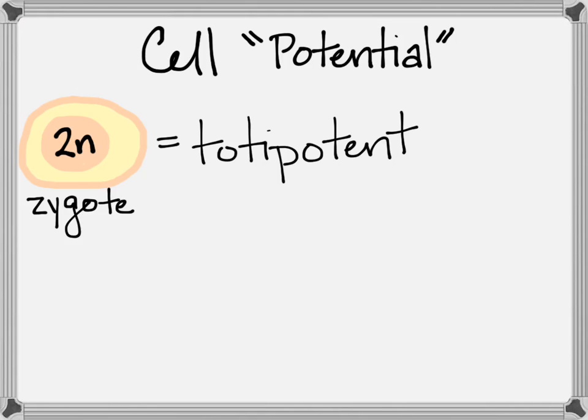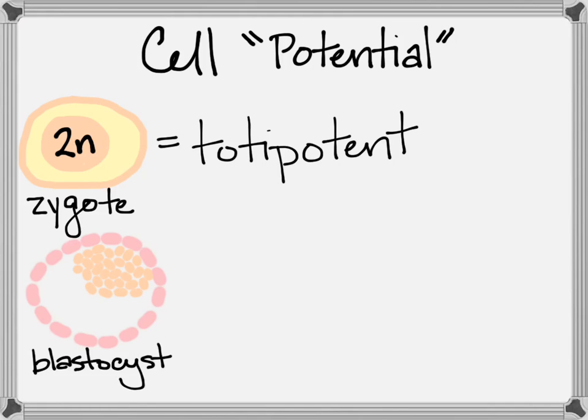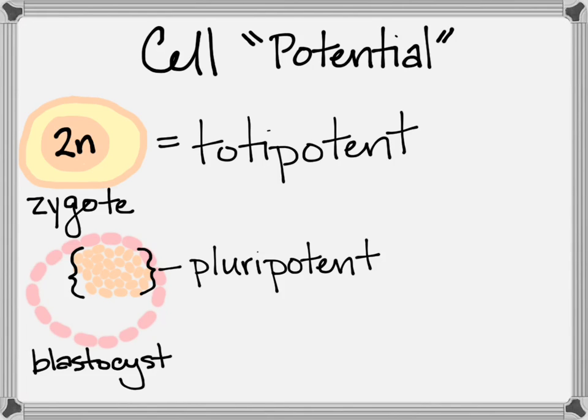After a few cell divisions, the cells start to express genes in ways that will make them forever different from their neighbors. Eventually, that creates that inner mass of cells and an outer mass of cells — the blastocyst stage — and it includes pluripotent stem cells.